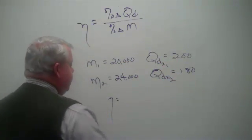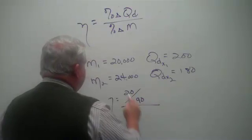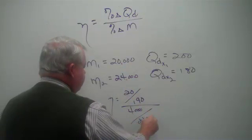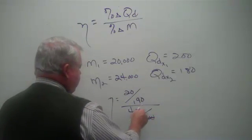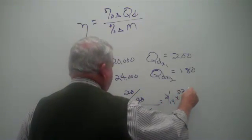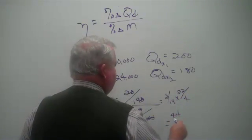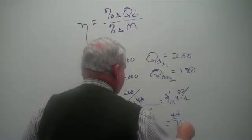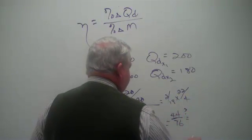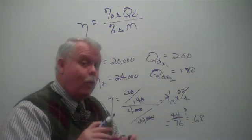Let's do the calculation very quickly. The change in quantity is 20, the average quantity is 190. The change in income is 4,000, the average income is 22,000. We do a quick calculation. First, we get rid of all the zeros. And we have 2 over 19 times 22 over 4, which gives us 44 divided by 76. That's a little over half. Let's say that's equal to about 0.68.